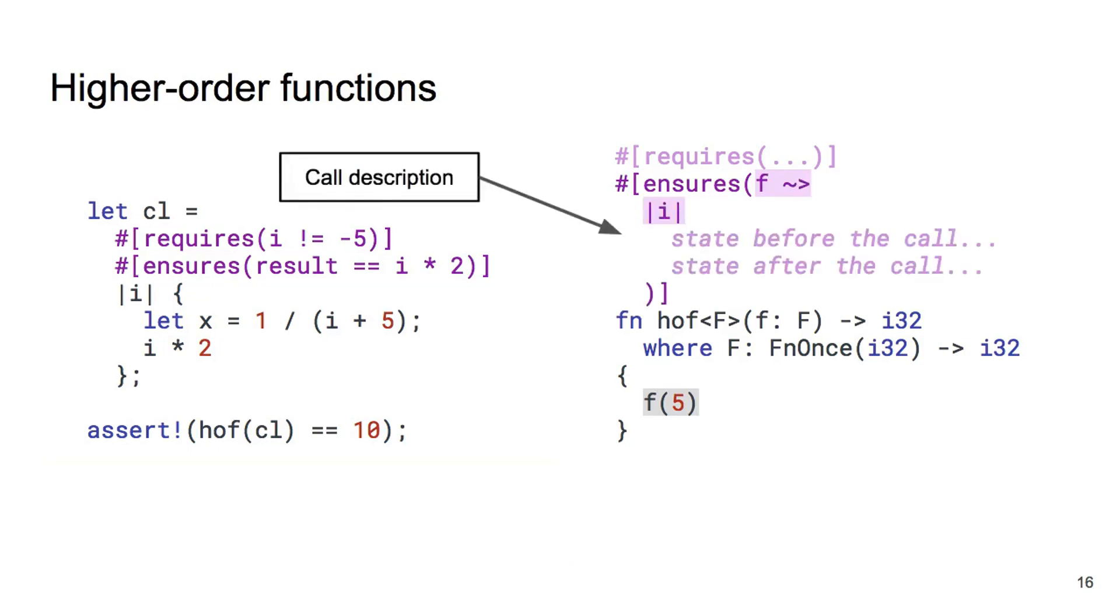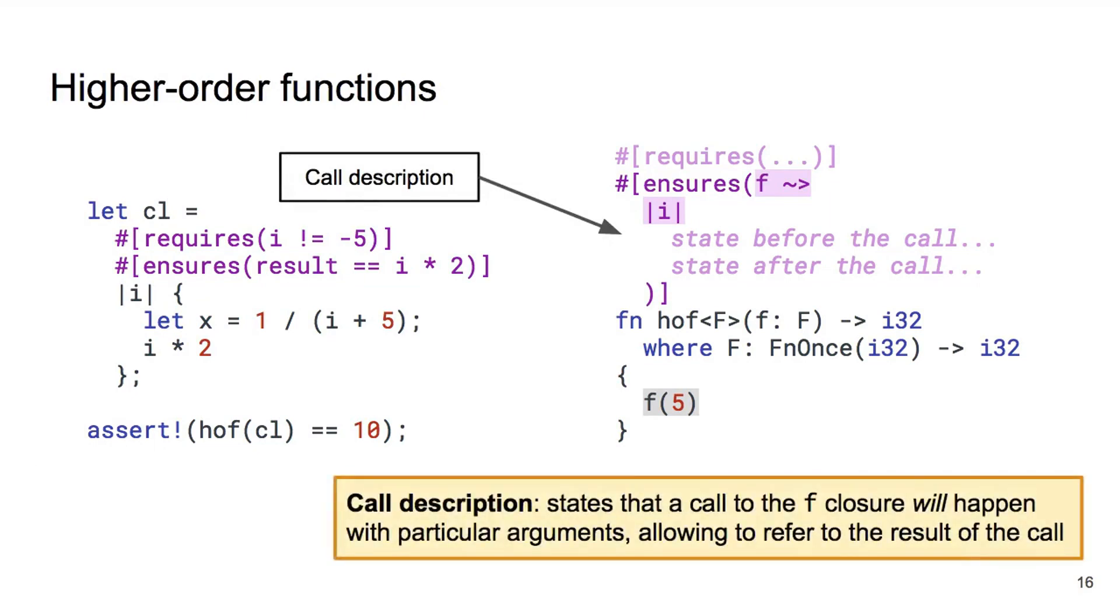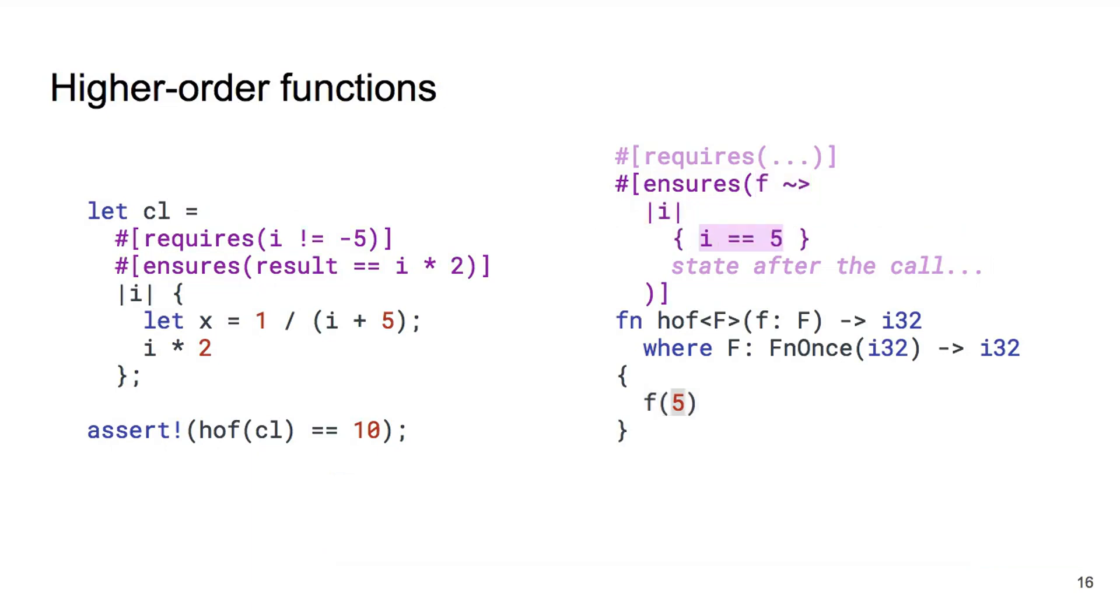To resolve this issue we introduce call descriptions. A call description says that a call to a given closure will happen, and it allows us to specify assertions about the state before the call and after the call. In particular we can refer to the result of such a call in the post state. In this case we know F will be called with the argument 5, and we know that its result will be the same as the result of HOF itself. Combining the concrete specifications of CL with the call description in HOF's postcondition, we can prove the assertion.